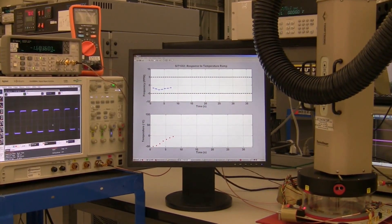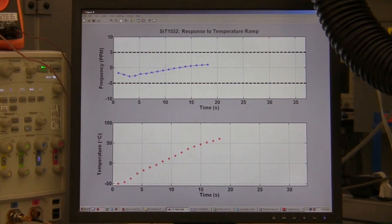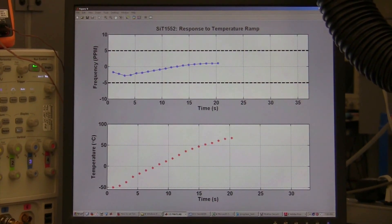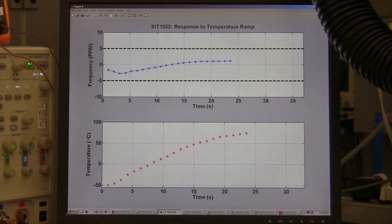The plot on the bottom is the change in temperature, and the plot on the top is the dynamic frequency stability. The horizontal lines, top and bottom, reflect the plus or minus 5 ppm spec limit.